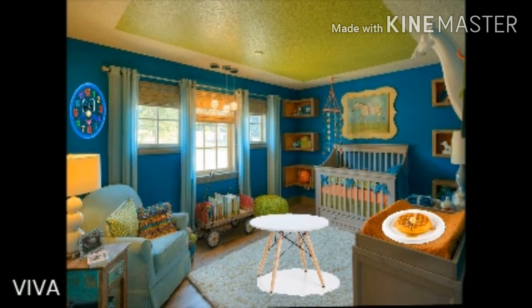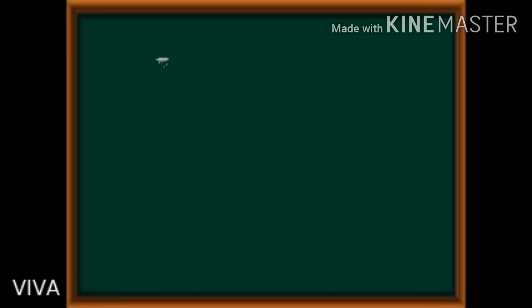Some other objects of daily life which are circular include a table top, a CD, a tire, a giant wheel, a pizza and round spectacles.